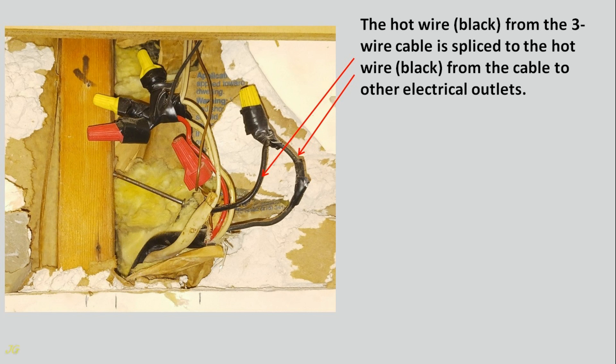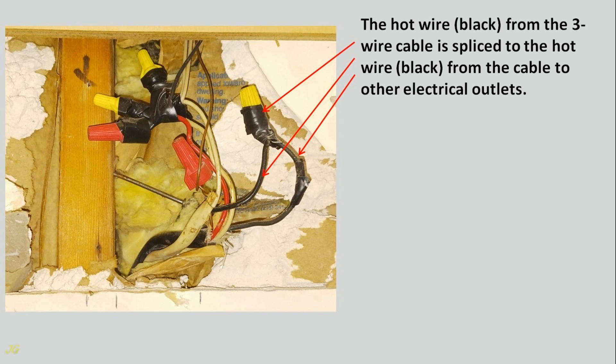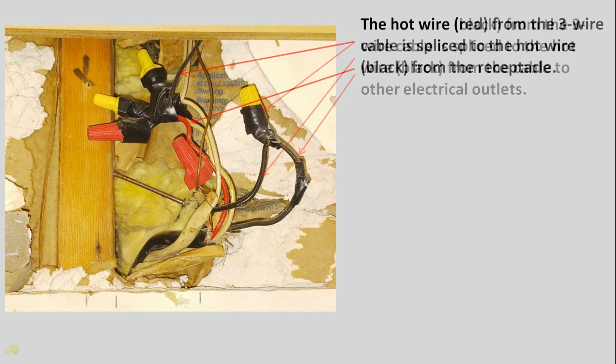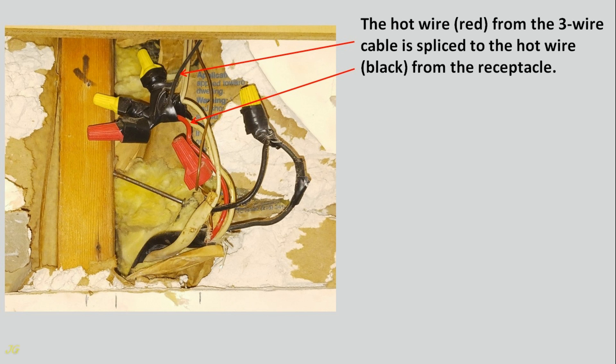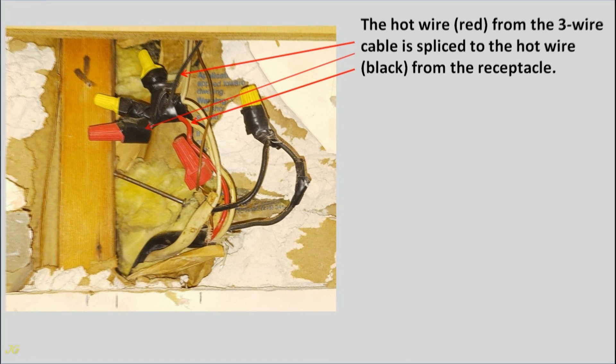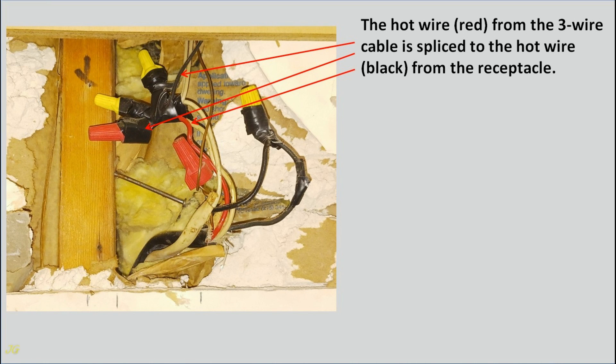The hot wire red from the three-wire cable is spliced to the hot wire black from the three-wire cable, which is spliced to the hot wire black from the receptacle.